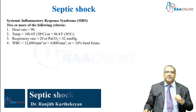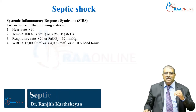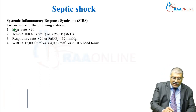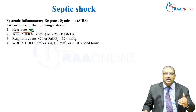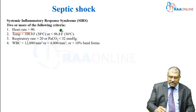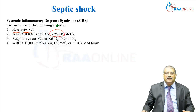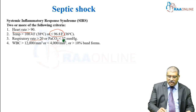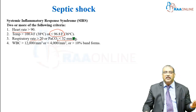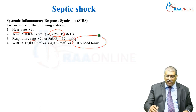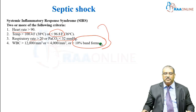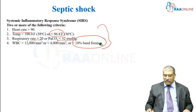Coming to the criteria of septic shock, first let us look at systemic inflammatory response syndrome. Your heart rate will be greater than 90 beats per minute. The temperature can be greater than 100.4 Fahrenheit or less than 96.8 Fahrenheit. The respiratory rate can be greater than 20 per minute or the PaCO2 is less than 32 millimeter of mercury. The WBC is greater than 12,000 per cubic millimeter or less than 4,000 per cubic millimeter, or band form is greater than 10%. If any two or more of these criteria are present, it is called systemic inflammatory response syndrome.